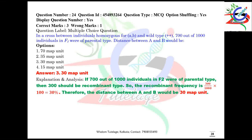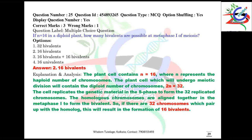The correct option is 30 map units. Question number 25: if n = 16 in a diploid plant, how many bivalents are possible at metaphase 1 of meiosis? The haploid number of chromosomes always represents the number of bivalents, so the answer is 16 bivalents.